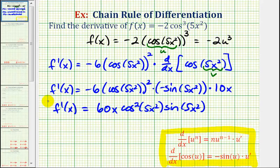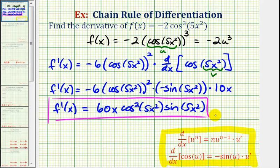So this would be our derivative function, where we applied the chain rule twice, in order to find this derivative. I hope you found this helpful.